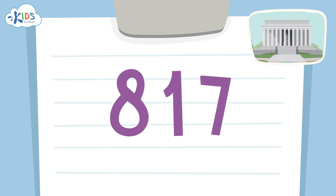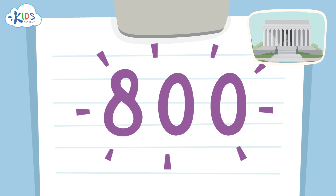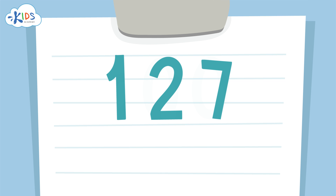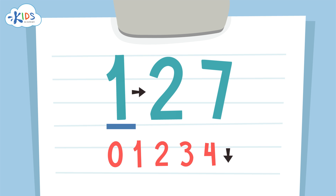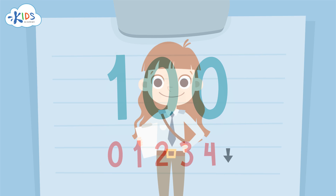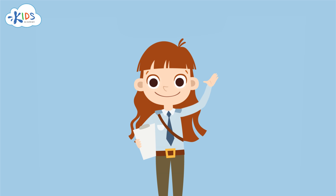We'll use the strategy of underlining the hundreds place and drawing an arrow to the tens place. I see a one in the tens place — if it's four or lower we have to round down. The eight in the hundreds place is underlined, so we round down from 817 to 800. Remember to look at the place to the right of the place that you want to round to, and round down if you see a four or lower. Thanks for watching, boys and girls. We'll see you next time.